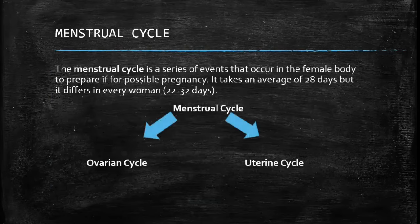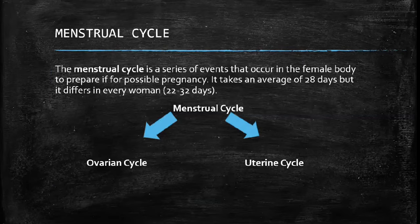What is the menstrual cycle? In simple terms, the menstrual cycle is a sequence of events that occur in the female body to prepare the female body for possible pregnancy. It takes an average of about 28 days, but it differs in every woman.